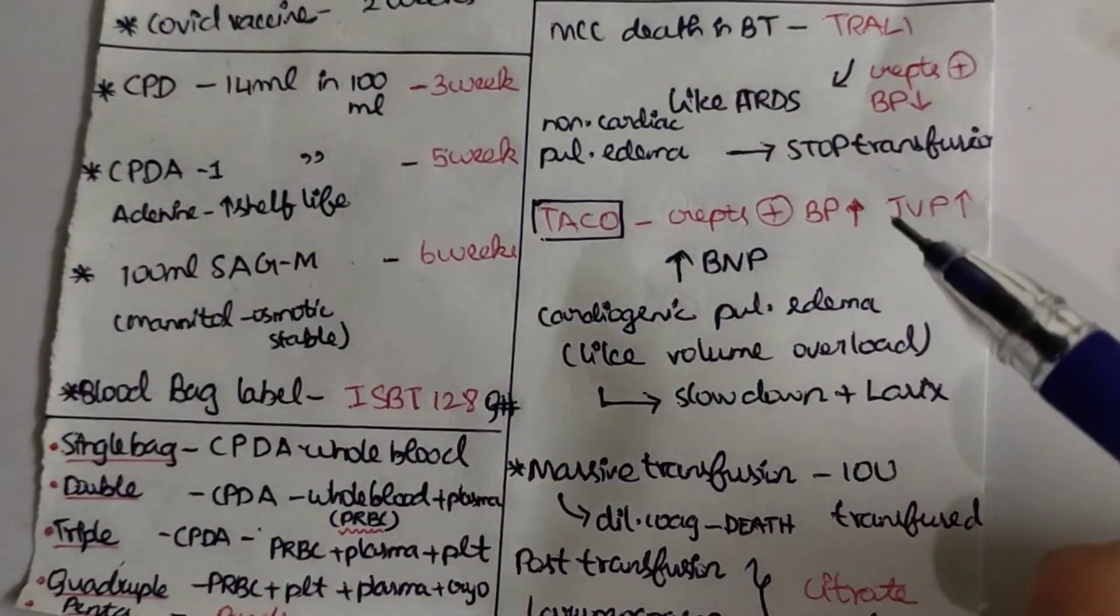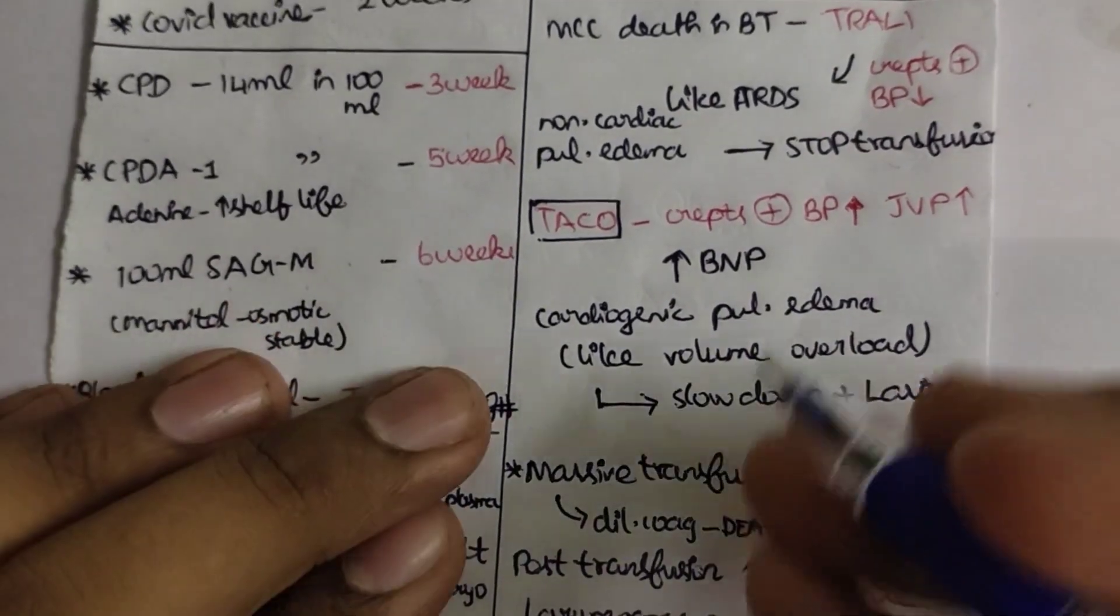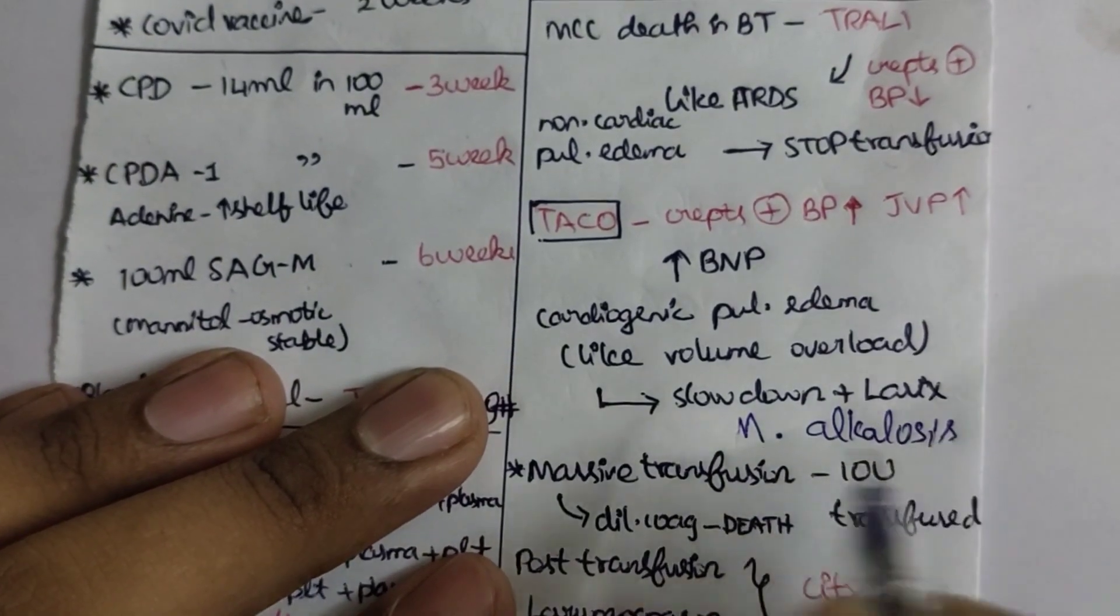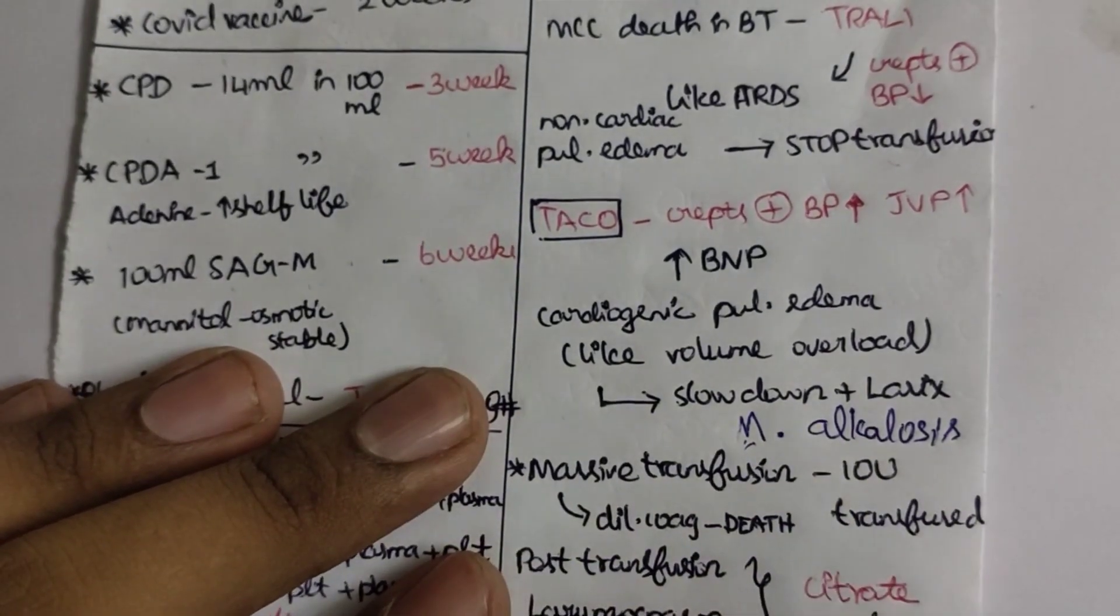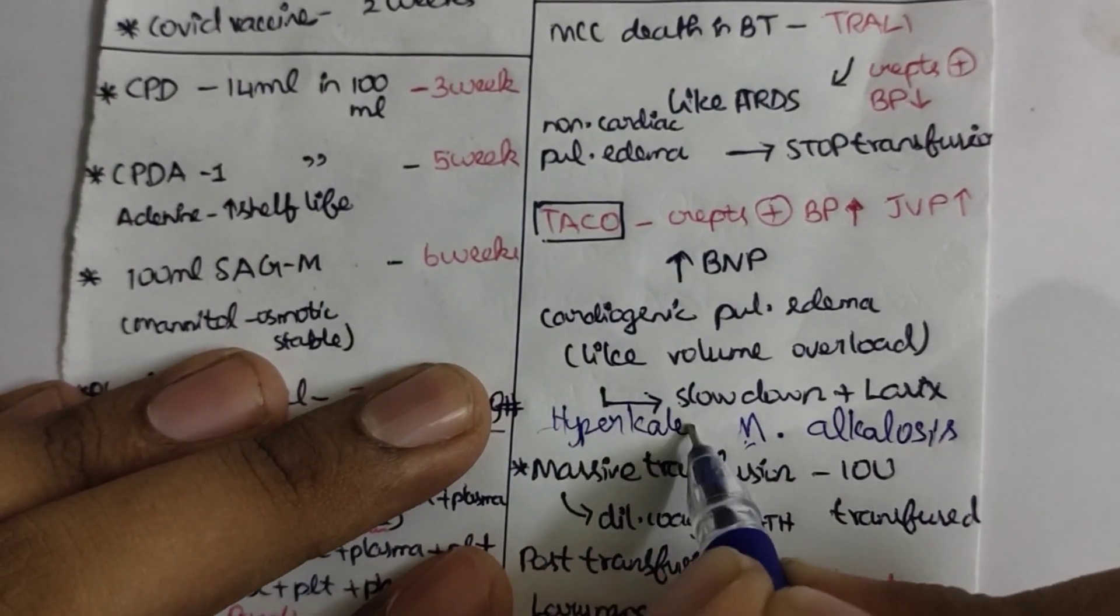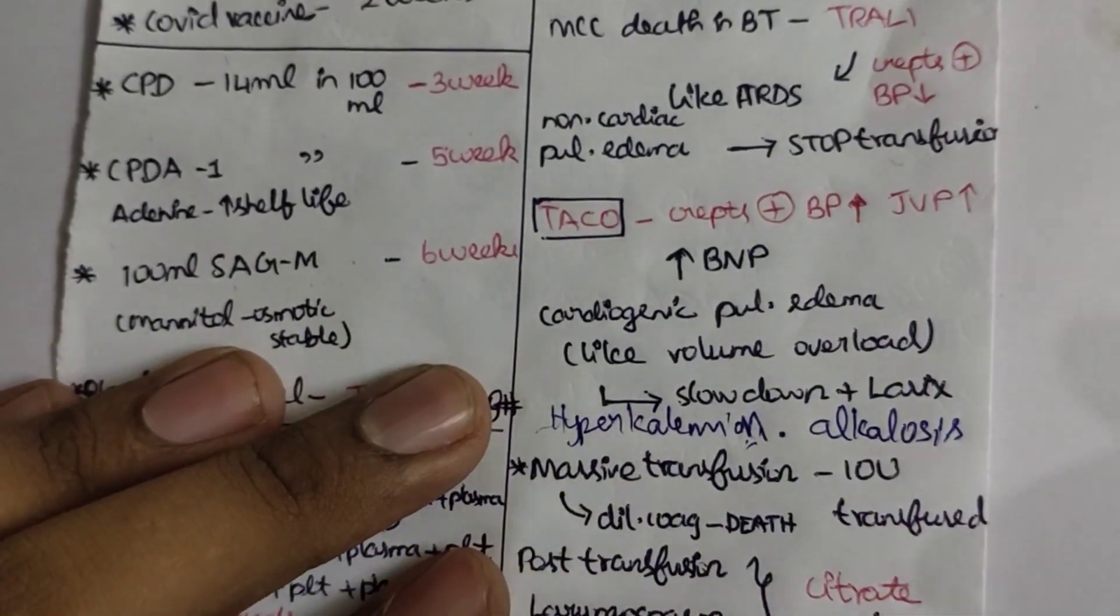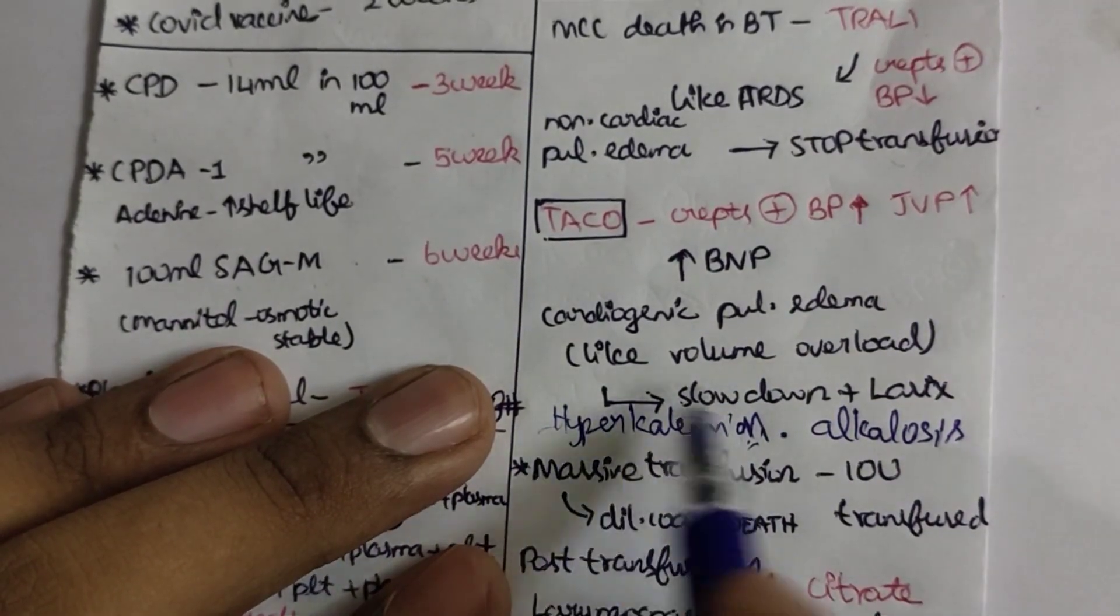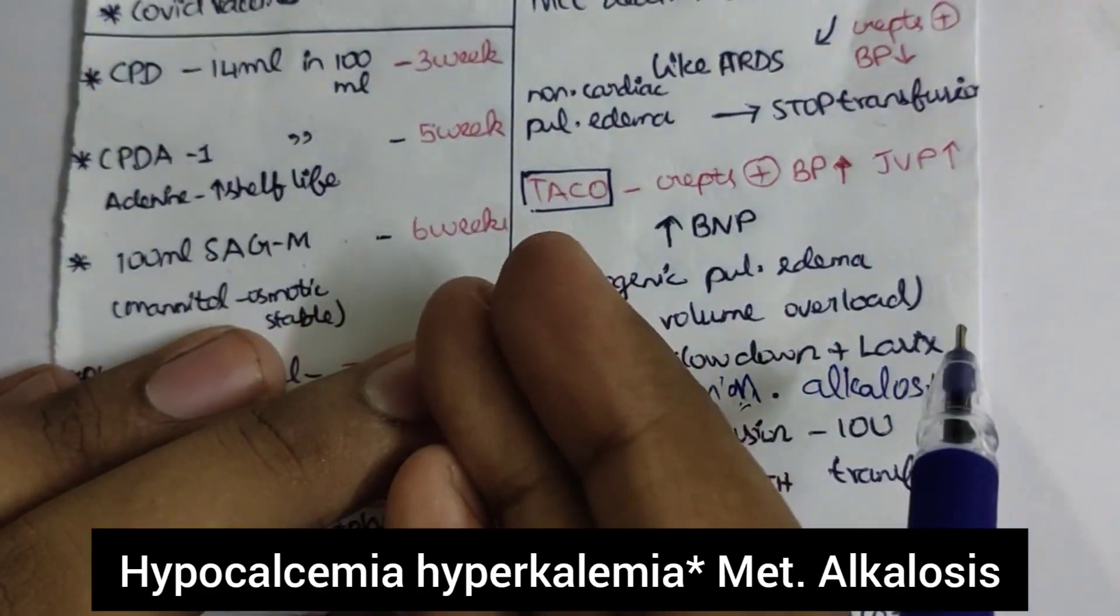After massive blood transfusion or simple blood transfusion, there will be a metabolic disorder, which is metabolic alkalosis. Next, which electrolyte abnormality can you expect after transfusion? The most common is hyperkalemia. This is due to increased lysis of RBCs, thereby causing an increase in the potassium content in the patient's body, leading to the symptoms of hyperkalemia. So, hypocalcemia, hyperkalemia, and metabolic alkalosis.